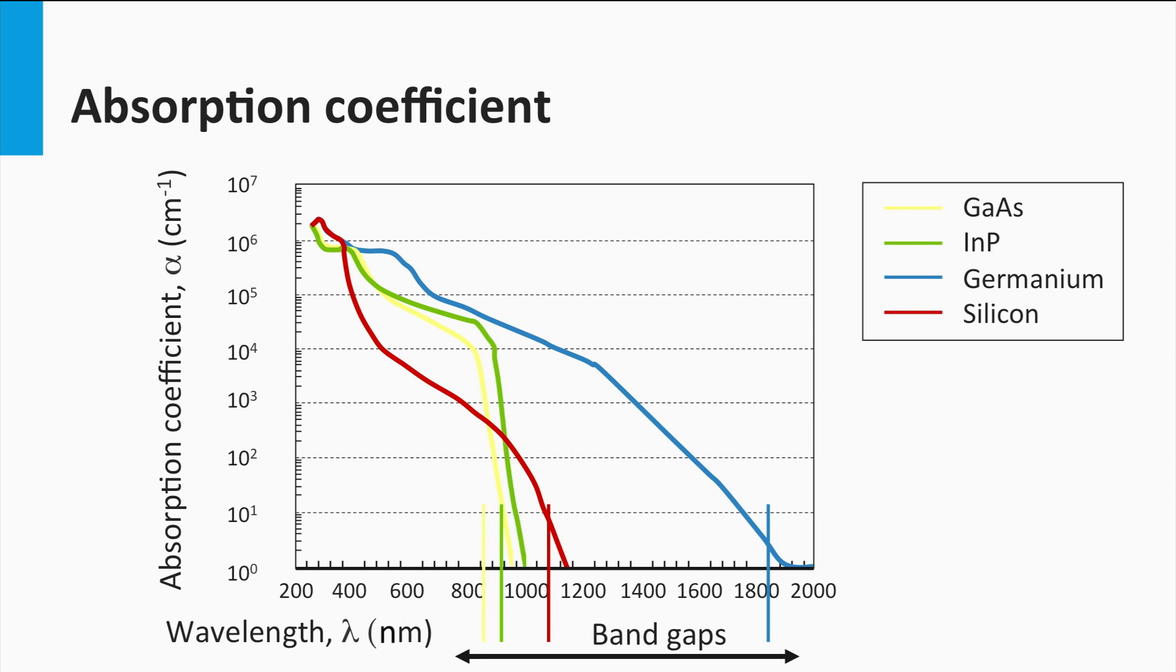First, you see that germanium has the lowest band gap. Germanium starts to absorb at high wavelengths, which means low photon energy. Gallium arsenide has the highest band gap, as it starts to absorb light at the smallest wavelength, or the highest photon energy. Secondly, if we focus on the visible spectral part from 300 nm up to 700 nm, we see that the absorption coefficient of indium phosphide and gallium arsenide is significantly higher than that for silicon.